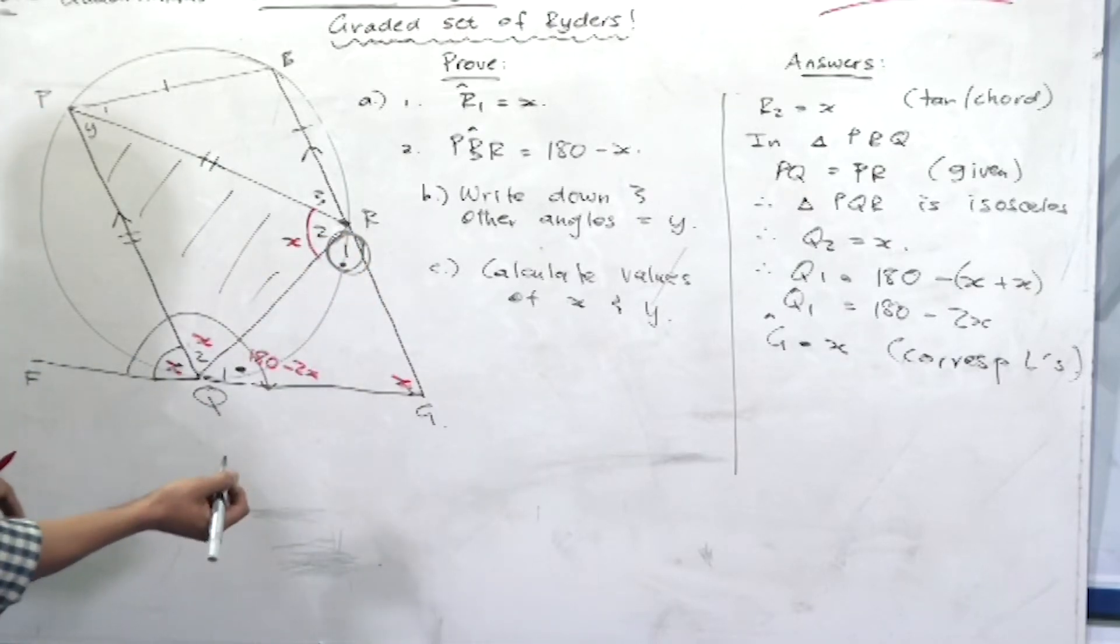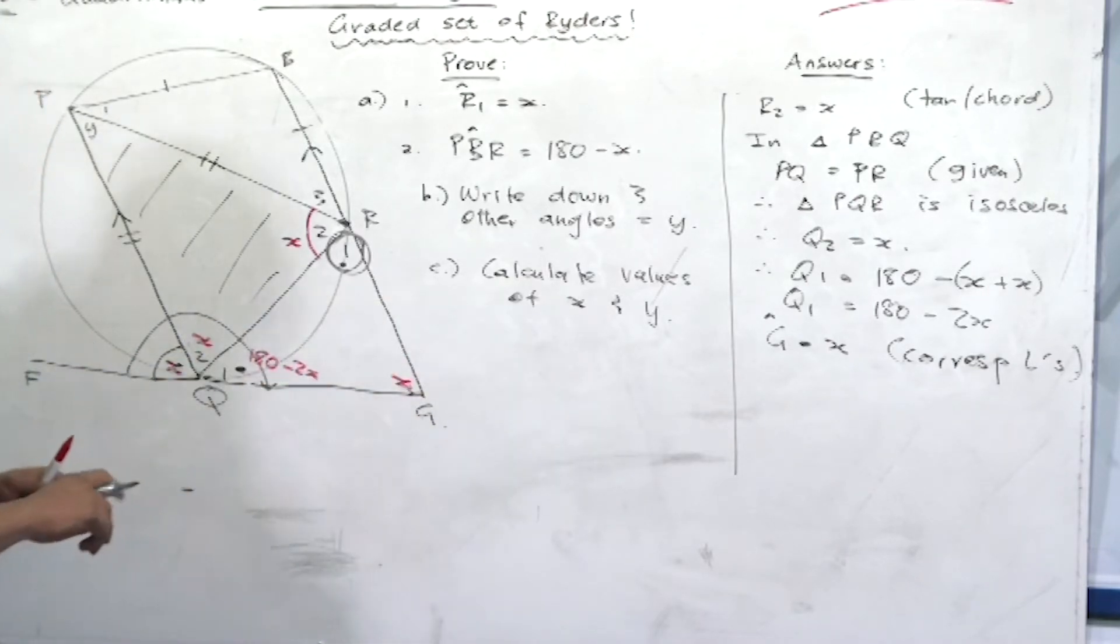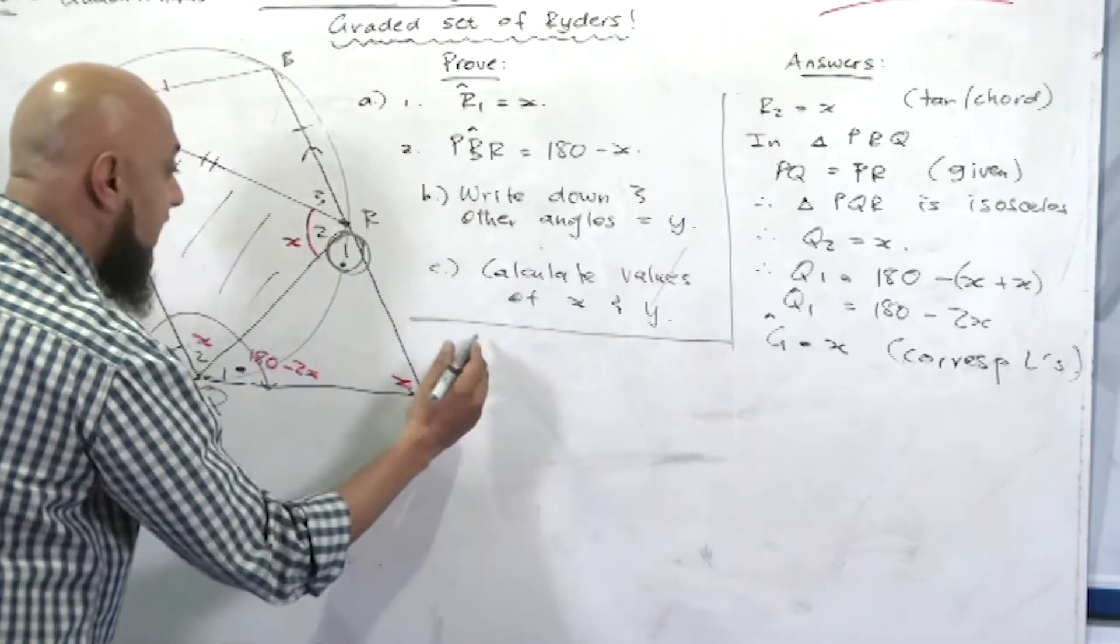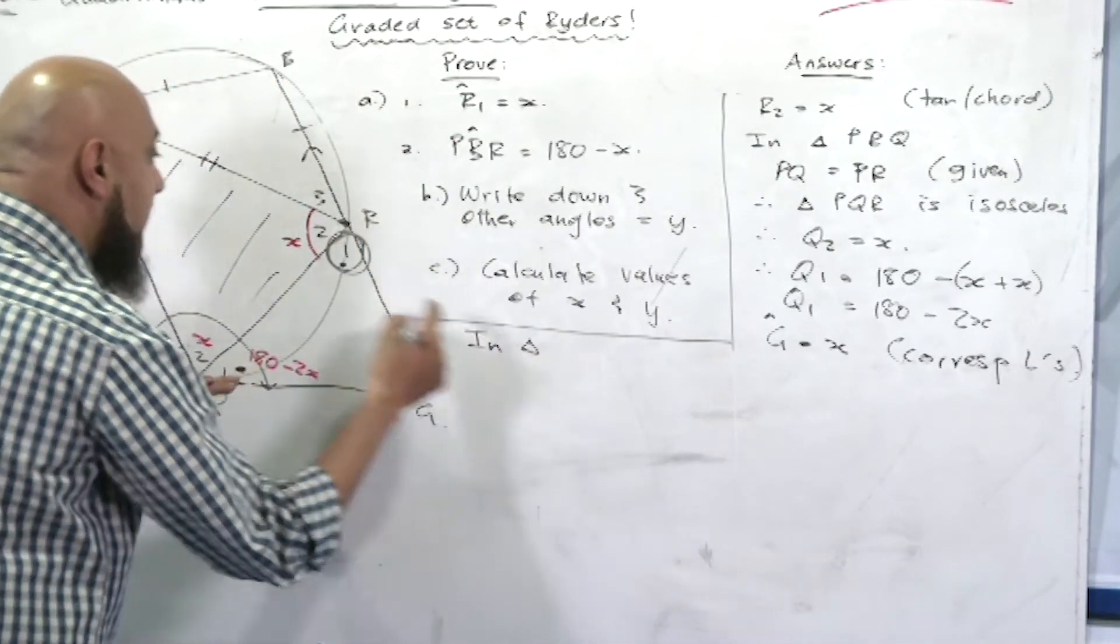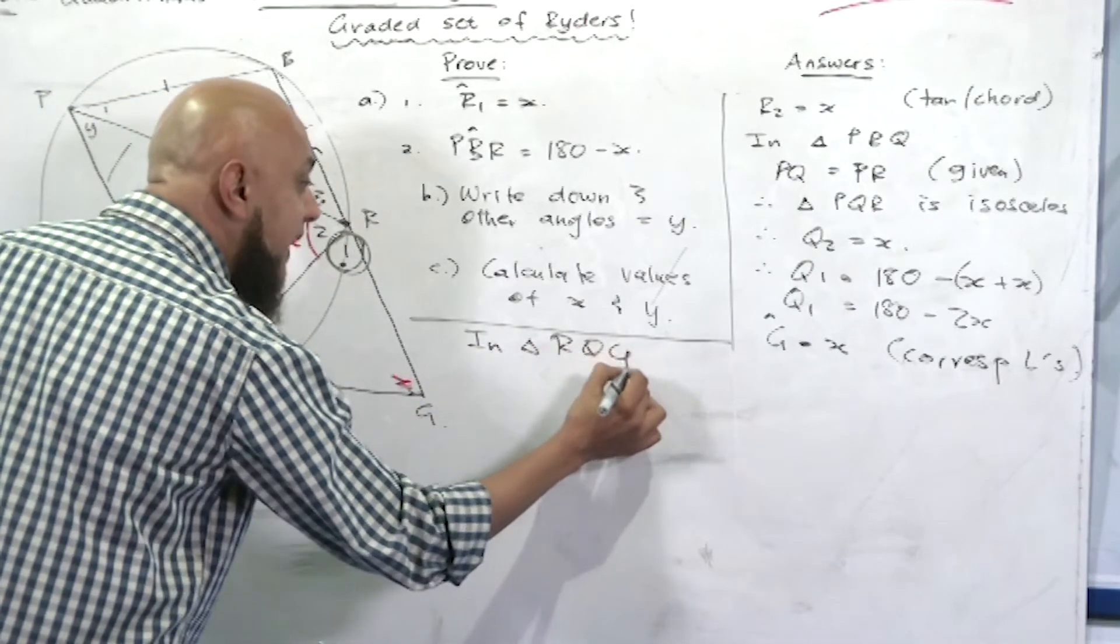Now we can get to r1 because sum of angles of a triangle add up to 180 degrees. So I'm just going to move up. In fact, let's do it here.